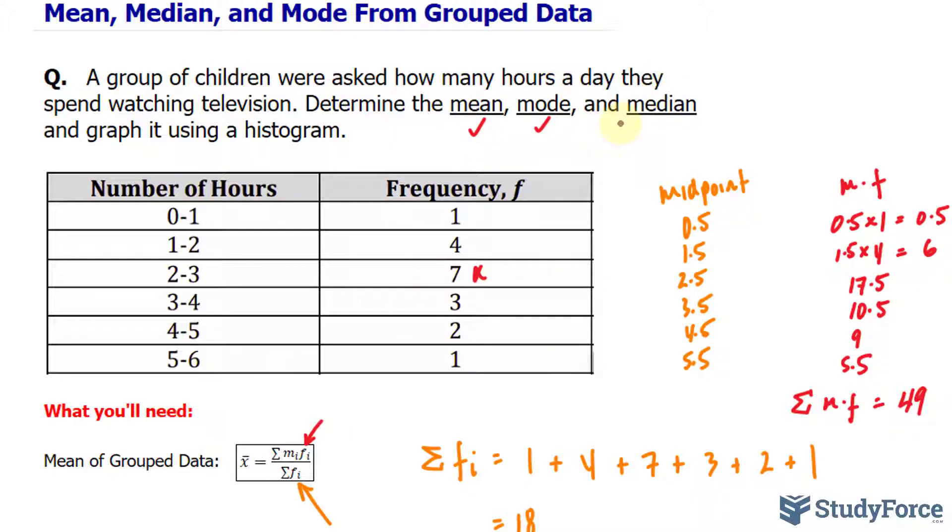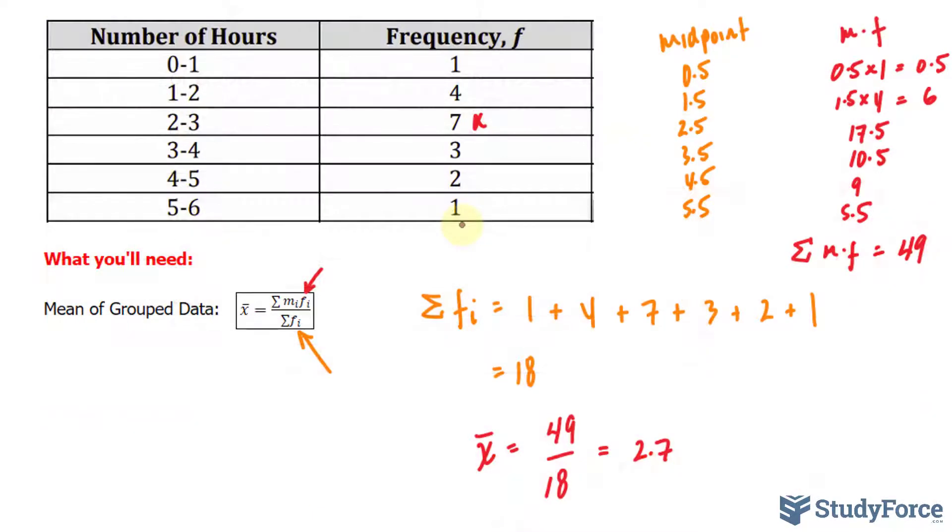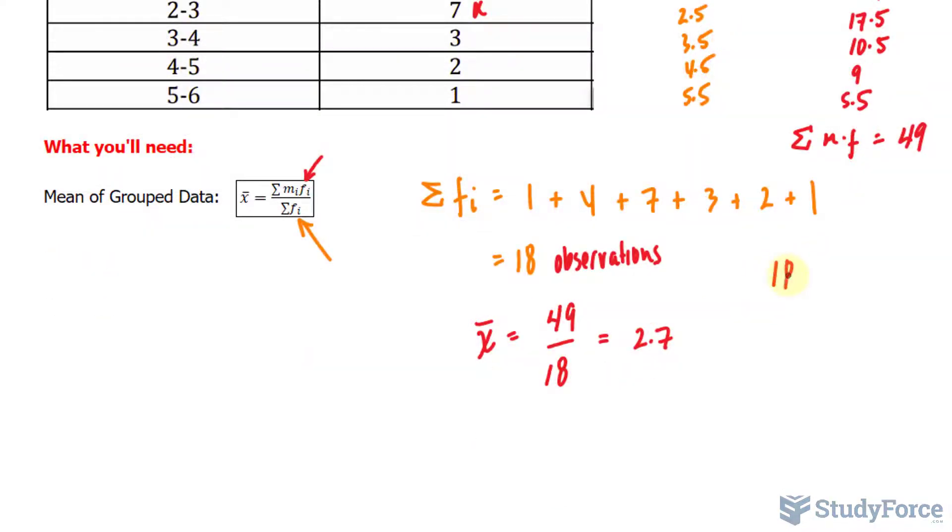What about the median? Median is what's in the middle. To calculate the median, you have to know how many total observations there are. There are a total of 18 observations. The middle observation will be between the 9th and 10th observation. The reason I know that is by using this handy formula where you take the number of observations, add 1, and divide by 2. 19 divided by 2 is 9.5, and that's in between 9 and 10.